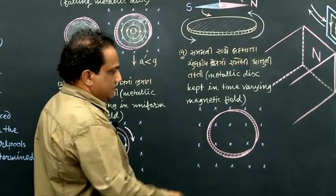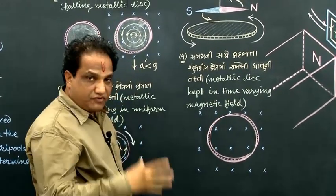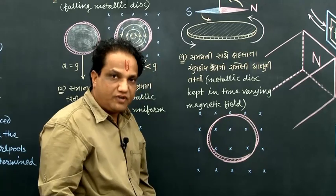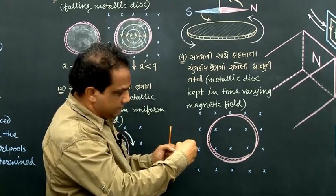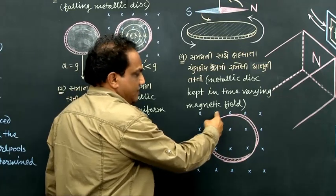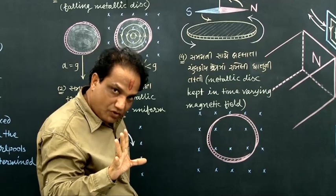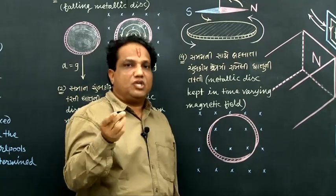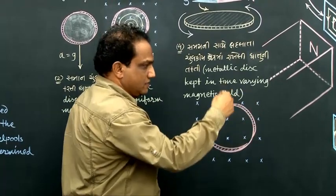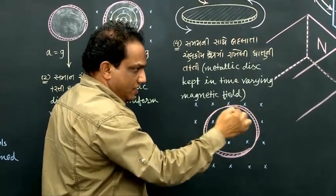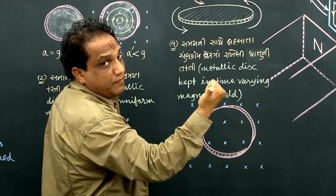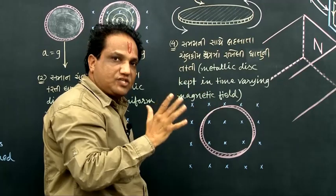Consider a metallic disc present in a time-varying magnetic field. Suppose the direction of the magnetic field is perpendicularly inside the plane of the figure, but the magnitude of the magnetic field increases. Because of that, the magnetic flux linked with this disc will also increase. Whenever there is a change in magnetic flux, induced currents get developed. When you view from the front side, induced currents are obtained anti-clockwise, such that they produce their own magnetic field perpendicularly outside — opposite to the applied field inside.